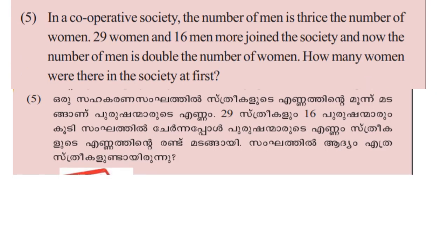Last question. In a cooperative society, the number of men is thrice the number of women. Let women be x, so men is 3x. Then 29 women and 16 men joined the society.